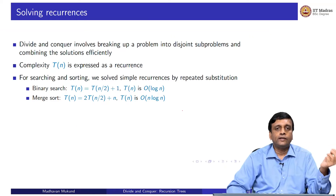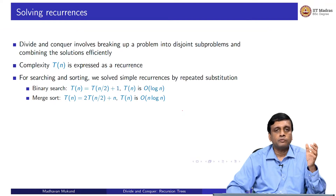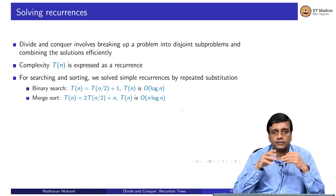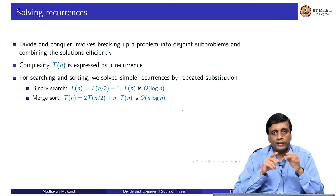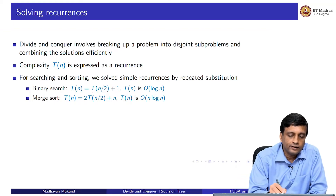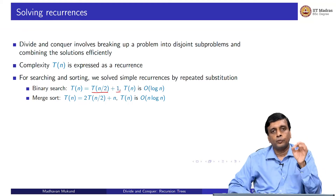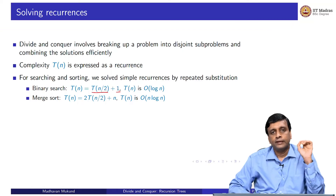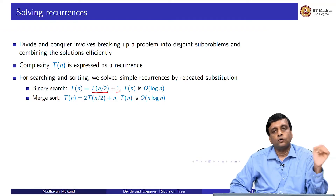Without calling it divide and conquer, we saw this at work when we looked at binary search and merge sort. For binary search, each successive iteration halves the interval to search. To search an interval of size n, we look at the midpoint and search either the left or right half. So T(n) requires searching half the interval, and assuming it is an array where we can get the midpoint in constant time, we get log n.